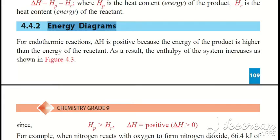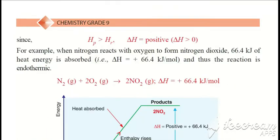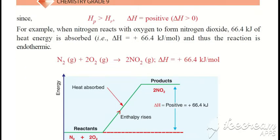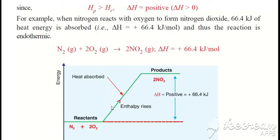Energy diagram for endothermic reaction. In an endothermic reaction, heat is absorbed, so the change in enthalpy is positive because the energy of the product is higher than the energy of the reactant. The system's energy increases as shown in the figure.